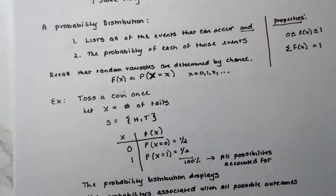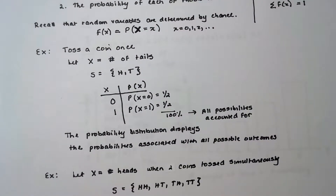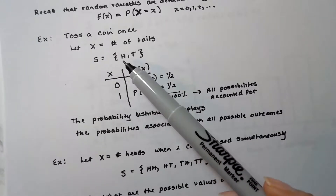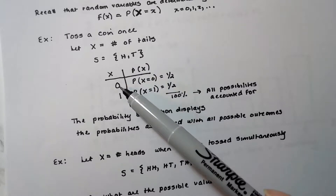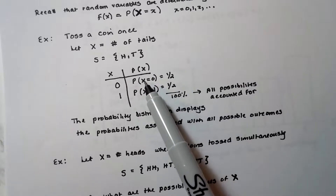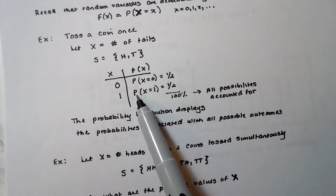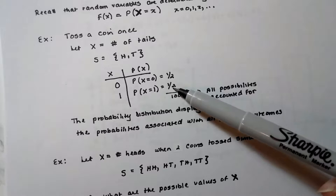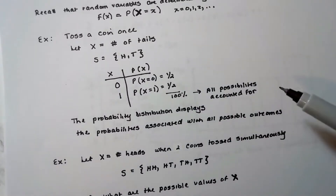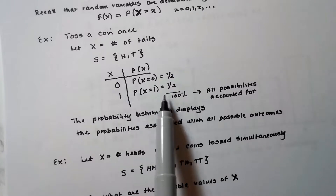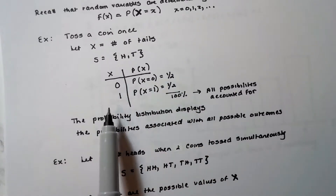A simple example: you toss a coin just one time and you want X to be the number of tails. Your sample space is either a head or a tail. In a little table: you could get zero tails — meaning a head — and the probability that X equals zero is one-half. Or you could land on a tail, so the probability that X equals one is also one-half. Notice the probabilities add up to 100%, meaning all possibilities are accounted for.